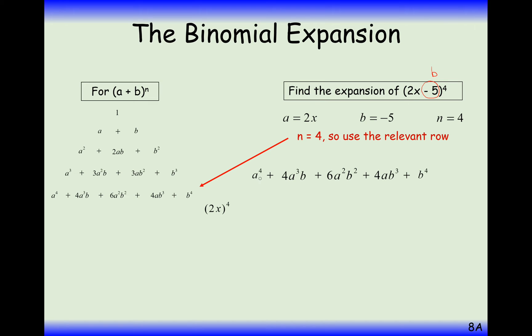So it's going to be 2x to the power of 4. Then it's going to be plus 4 times 2x cubed times minus 5. Add 6 times 2x squared times minus 5 squared. Add 4 lots of a, which is 2x, b cubed, which is minus 5 cubed. And b to the power of 4, which is minus 4, minus 5 to the power of 4.